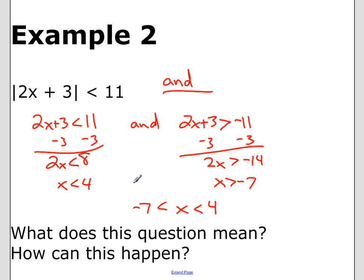Let's say I put the number 0 in: 2 times 0 is 0, 0 plus 3 is 3, and 3 is less than 11. So I chose a number between negative 7 and 4, plugged it in — that's a good way to check your answers and make sure you're doing it correctly.